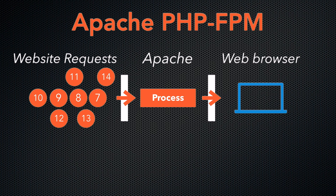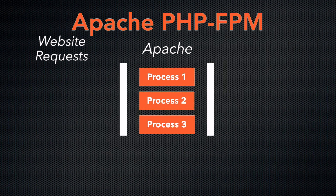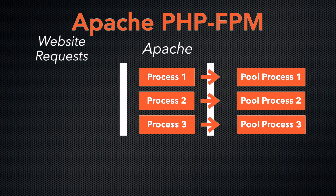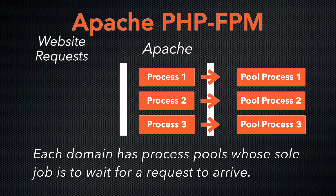If those website requests spike, Apache alone may not be fast enough to handle those requests. When you enable Apache PHP-FPM, the PHP master process starts up PHP instances for each domain in pools. Apache can respond to requests faster because the PHP instances help it to respond. PHP-FPM pools are other processes that Apache creates to handle heavy loads.